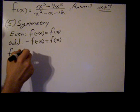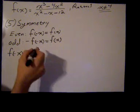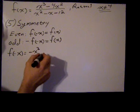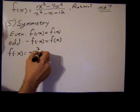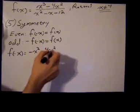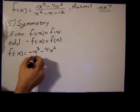So f of negative x, negative x cubed is going to be negative x cubed. Negative x squared is just going to be x squared. So already you can see that it's not going to have even symmetry. This throws it off.